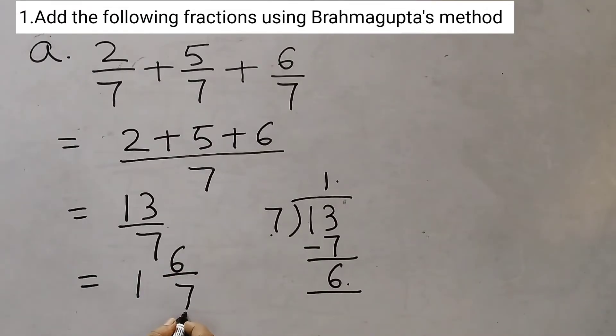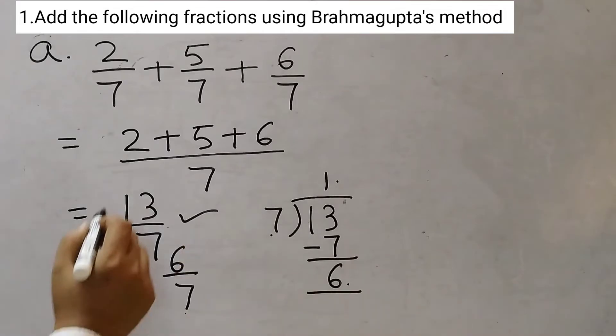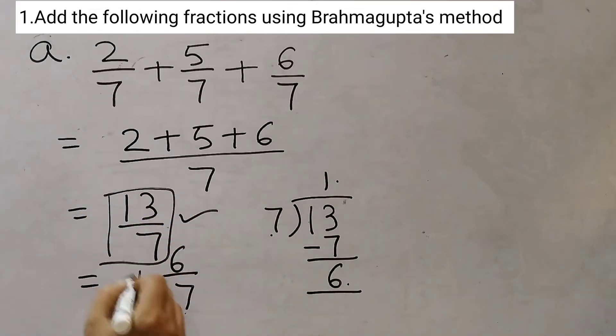So we will write it as 1, 6 and 7. So 1 whole and 6 by 7 is the fraction. So you can write it like this. 13 upon 7 or 1, 6 by 7. Let me write it properly. Here 1, 6 by 7 we write 1 whole and then 6 by 7 like this. You can write the answer like this or like this.